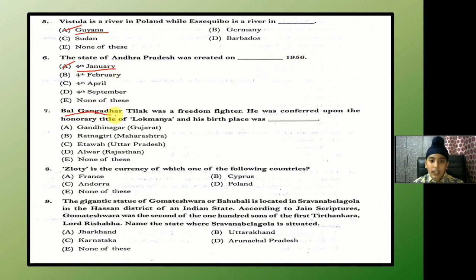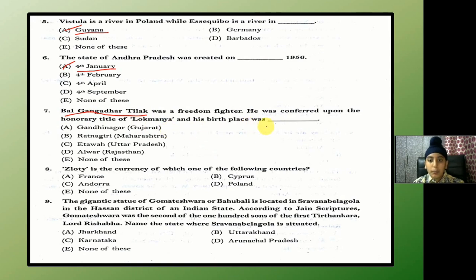Bal Gangadhar Tilak was a freedom fighter. He was conferred upon the honorary title of Lokmanya. His birthplace was? The answer is B — Ratnagiri in Maharashtra.